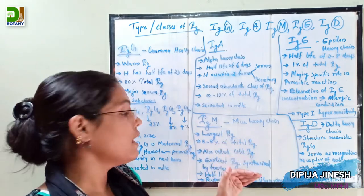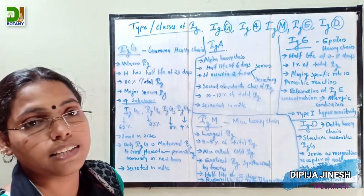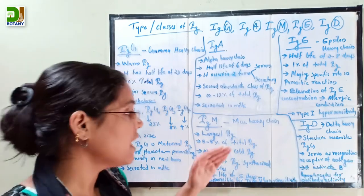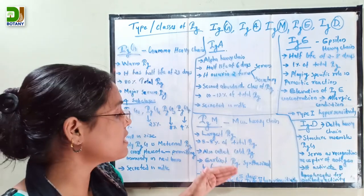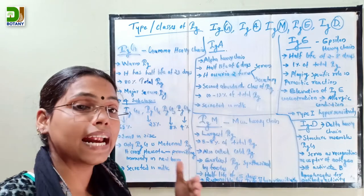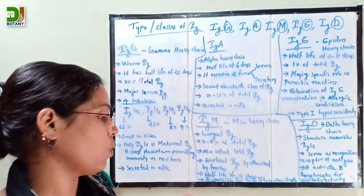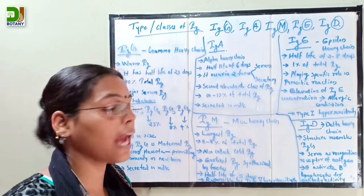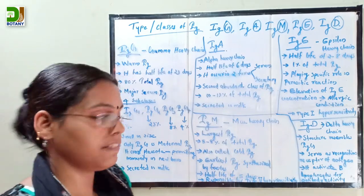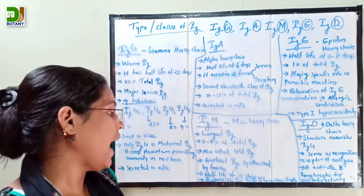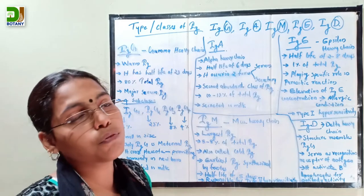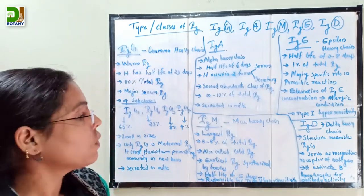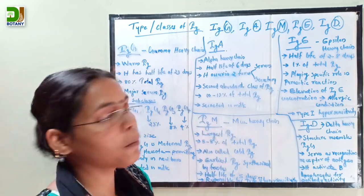Immunoglobulin M is the earliest immunoglobulin synthesized by the fetus. Its half-life is five days, and it is mainly responsible for type 2 hypersensitivity.